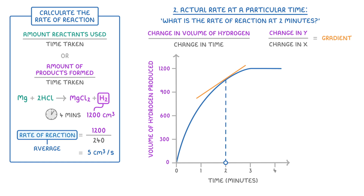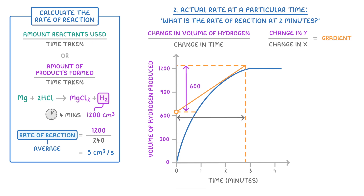The best way to do this is to make your line as long as possible, so that it hits one of the axes. Then trace lines from the other end of your tangent to the y-axis and then to the x-axis. So now this section here would be the change in the hydrogen, which is about 600, and this section here would be the change in time, which is about 2 minutes 50 seconds, or 170 seconds. So we just do 600 divided by 170 to give us 3.53 cm³ per second as our rate.